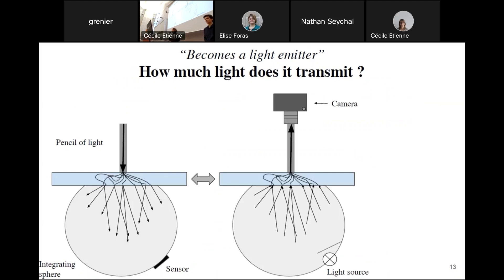On the right, this is an equivalent configuration. Actually, because of the reversing path of the light, it is equivalent to send a pencil of light and collect the light in all directions, or to send light in every direction and collect it in a pencil of light. And that's what we did.